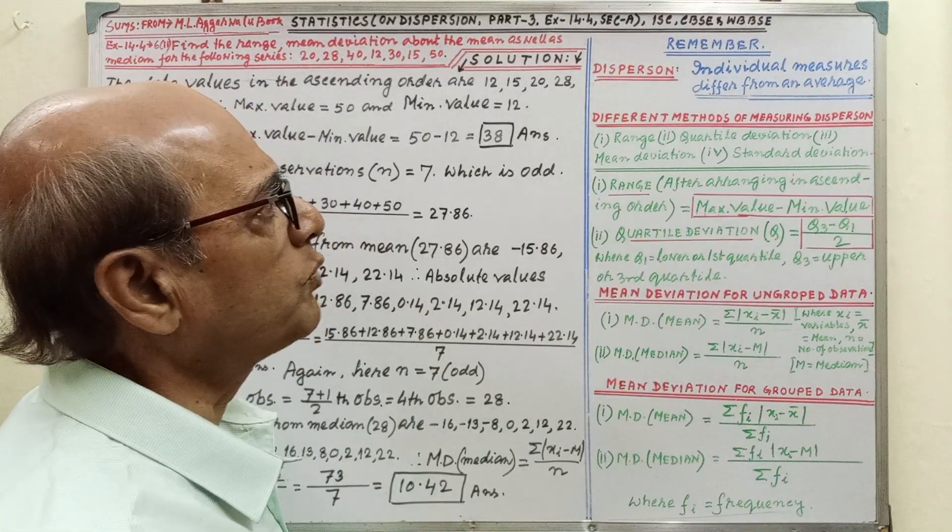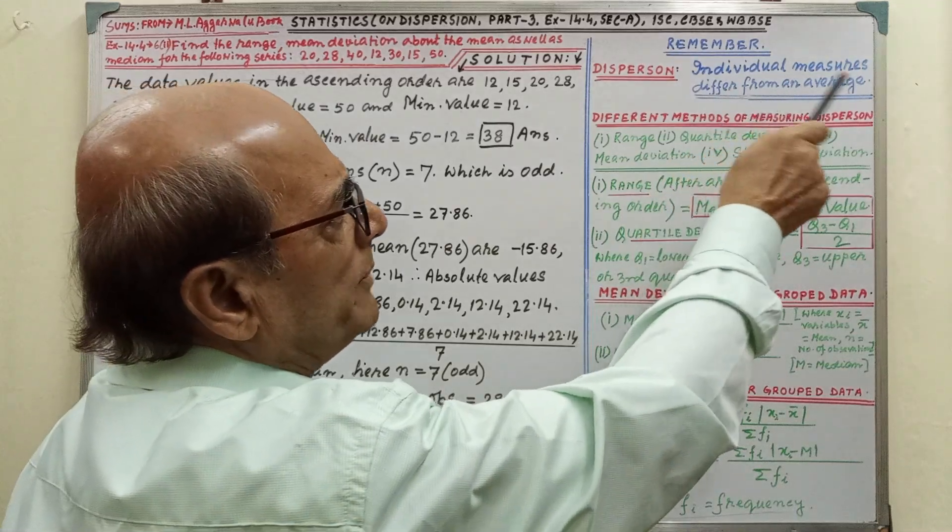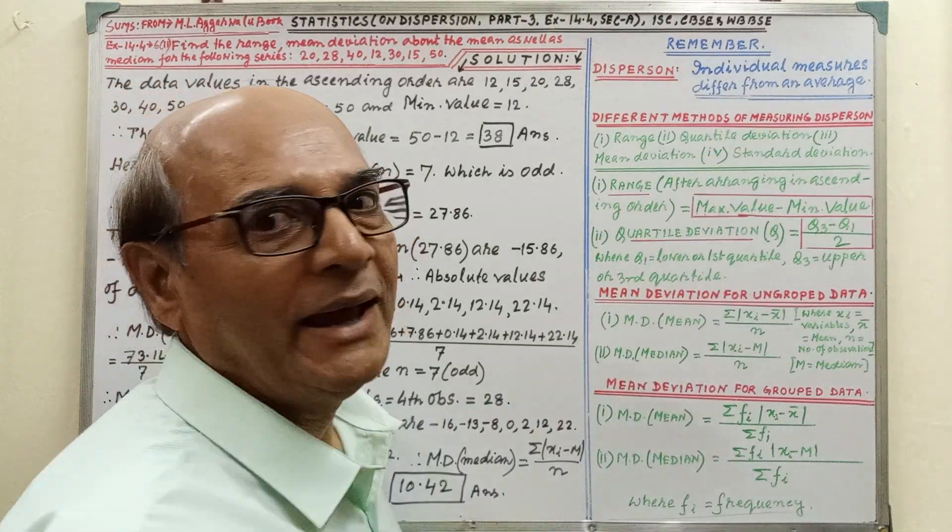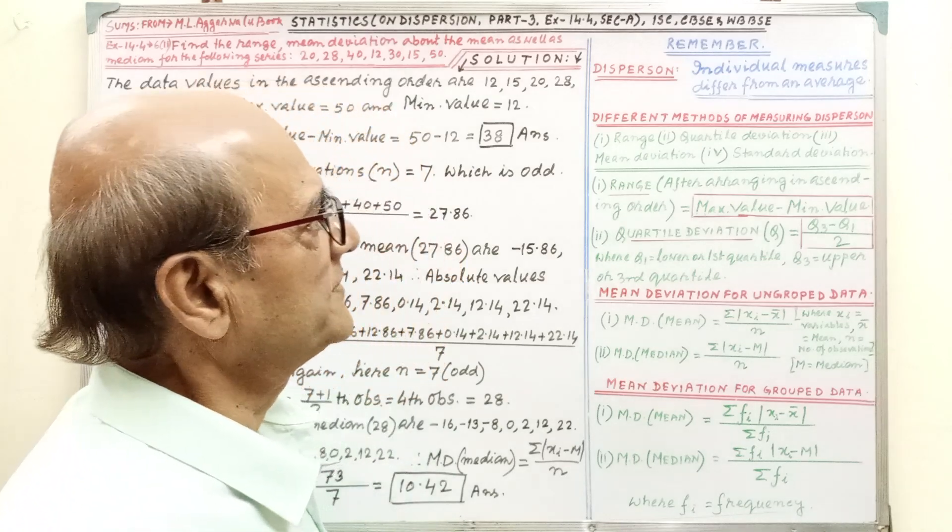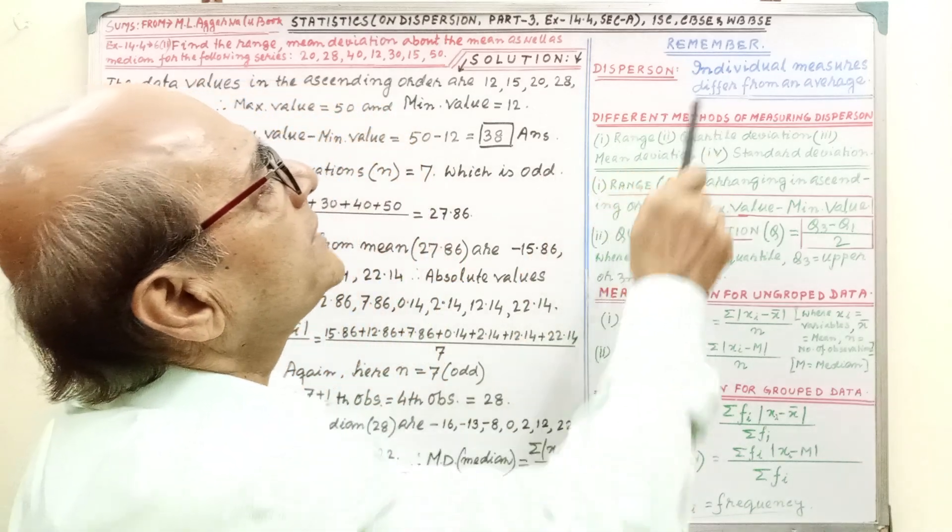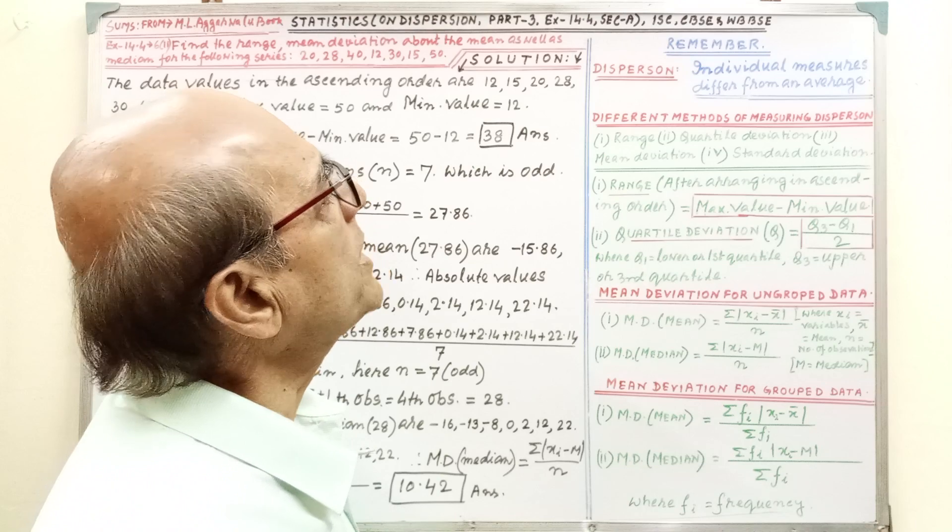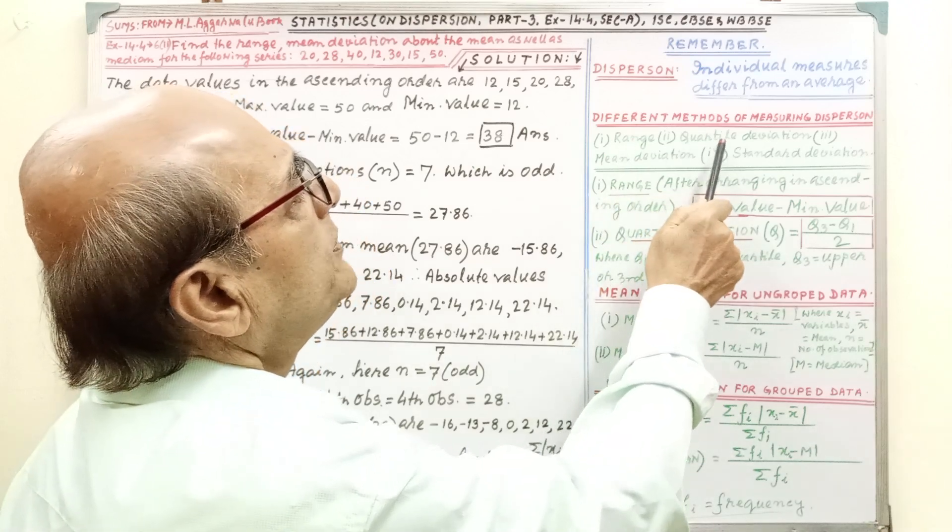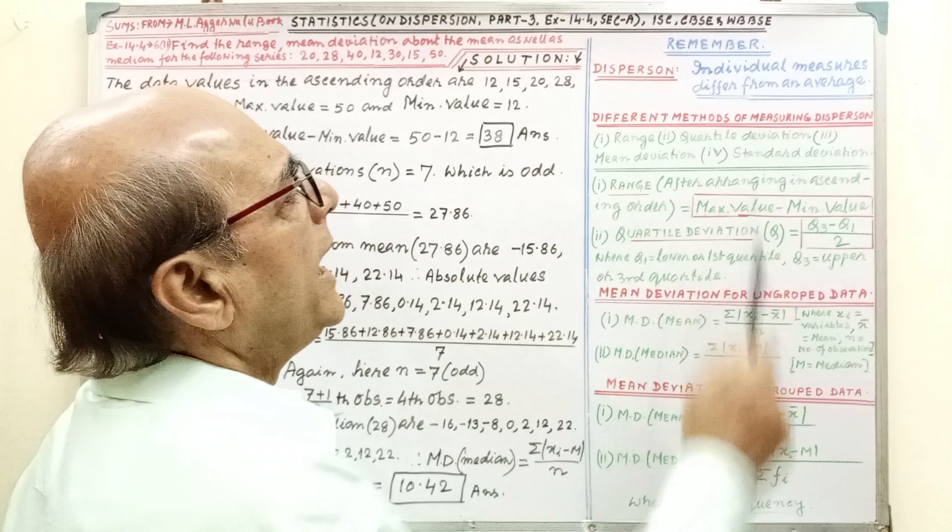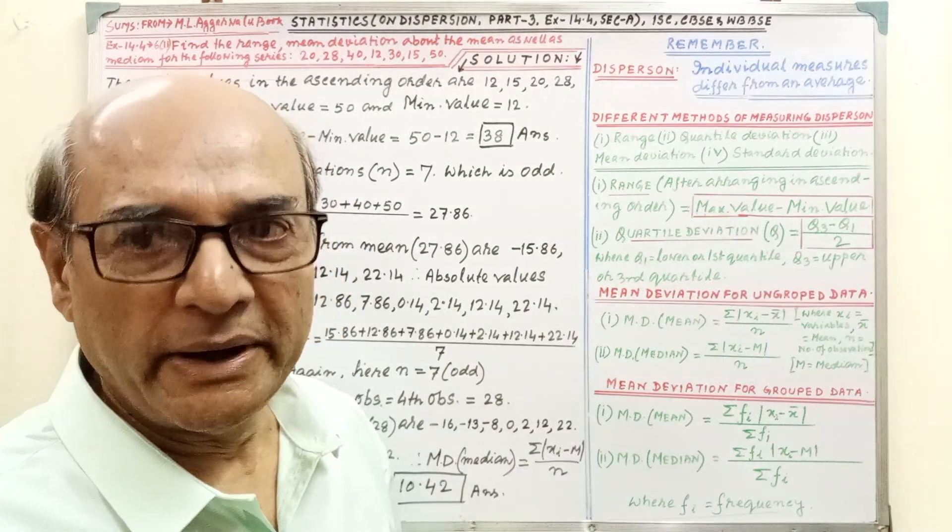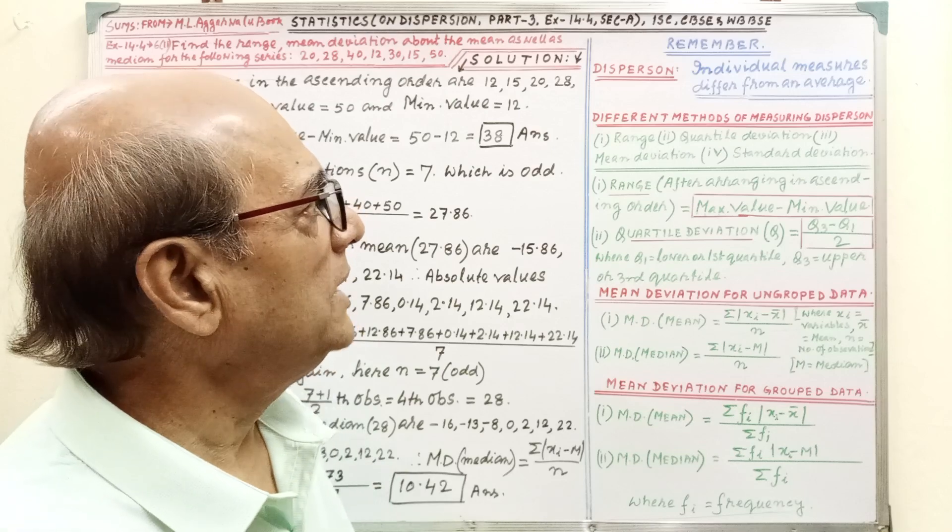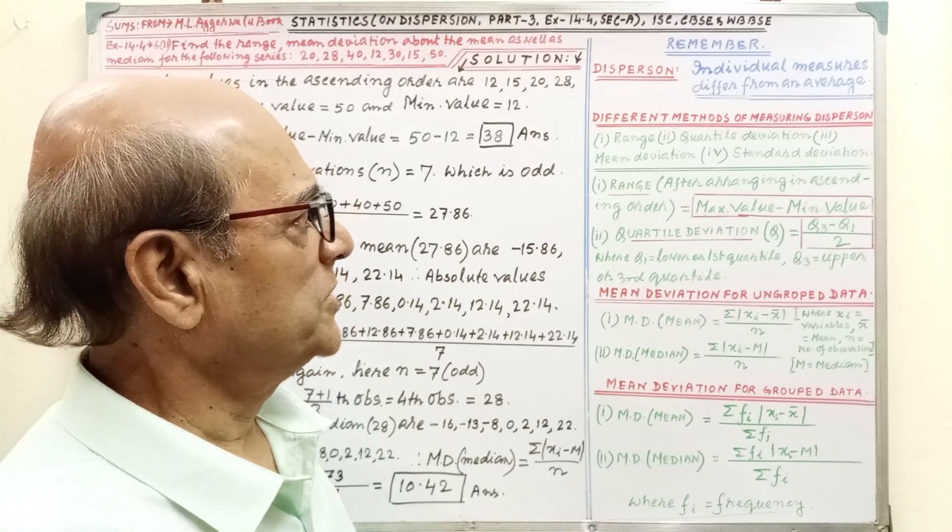Dispersion means what? That is, individual measure differs from an average, little difference. The different method of measuring dispersion, that is, range, quartile deviation, mean deviation, and standard deviation. These are the four methods for finding the dispersion.